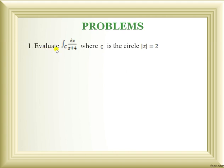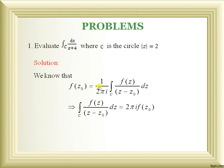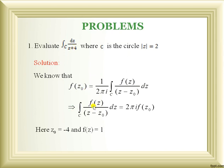Problem 1: Evaluate ∫_C dz/(z + 4) where C is the circle |z| = 2. The given closed curve is |z| = 2. Comparing with Cauchy's integral formula, z₀ = −4 and f(z) = 1. We need to check whether z₀ = −4 lies inside or outside the circle. Substituting into |z| = 2 gives |−4| = 4.